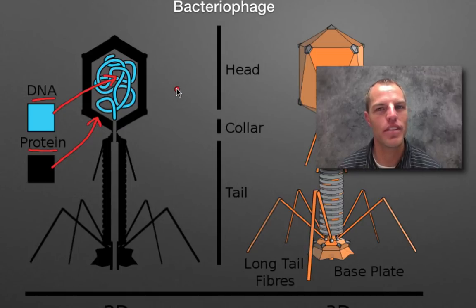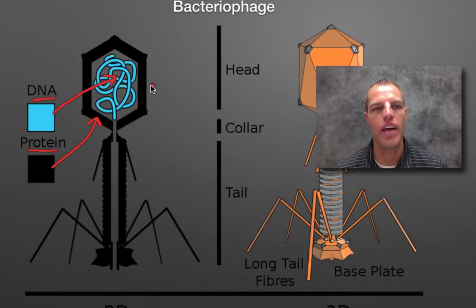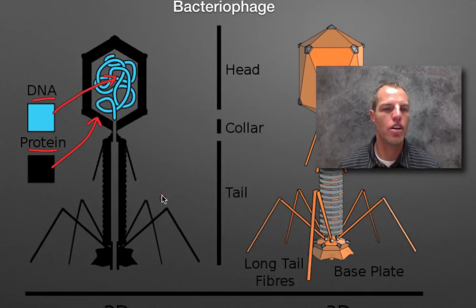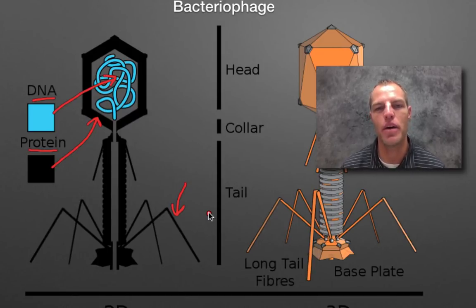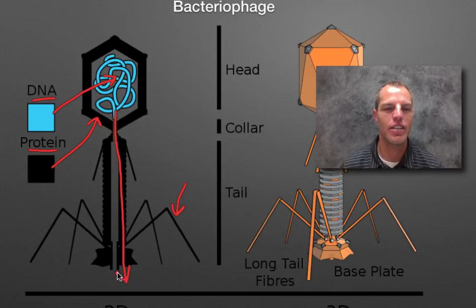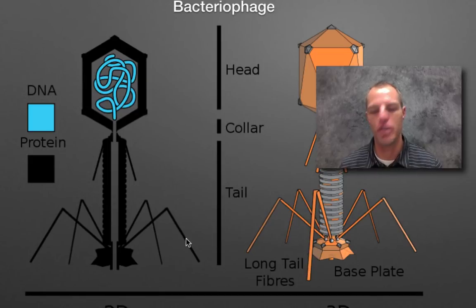Those are the only two parts, and that's why viruses are non-living — they don't have the mechanisms that a normal cell would have to produce its own energy or to reproduce. With this bacteriophage, you'll also notice these little leg structures. They allow it to attach to the bacteria so it can inject its DNA down into that bacteria.